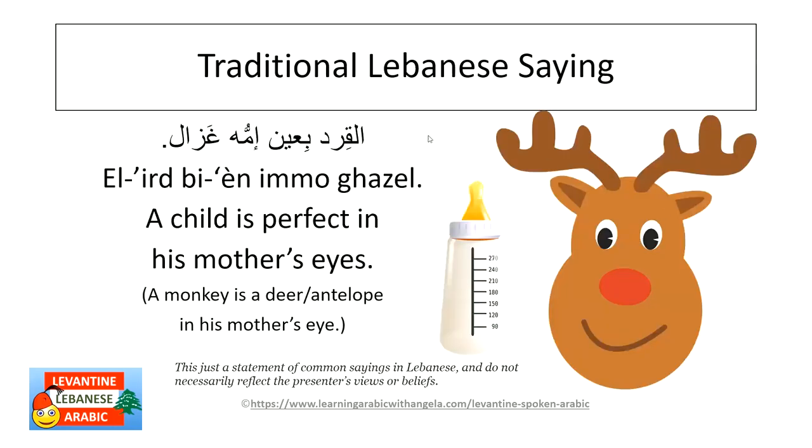'Al-ird bi-'ayn immu ghazal' — a monkey in its mother's eye is a gazelle (deer/antelope). This means a child is perfect in the mother's eyes because a mother loves her children unconditionally.